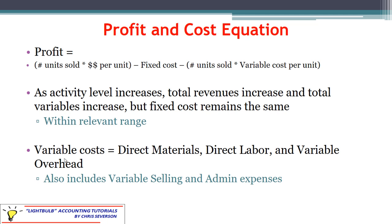Variable costs include things like direct materials, direct labor, and variable overhead — those are our variable product costs. However, we also have to consider variable selling and administrative costs. Even though those are not product costs, they are still variable costs and part of our overall profit calculation. We're not looking at just gross profit, which subtracts only product costs. Instead, we're looking at overall net profit or net income, which subtracts all expenses — both period and product.